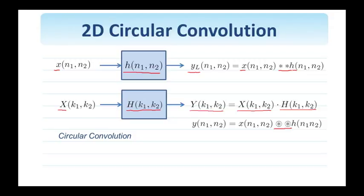but now all the shifts and reflections are circular and not linear. Another way to think of the circular convolution, maybe a more useful way, is through the linear convolution as shown by this expression. So, according to this,